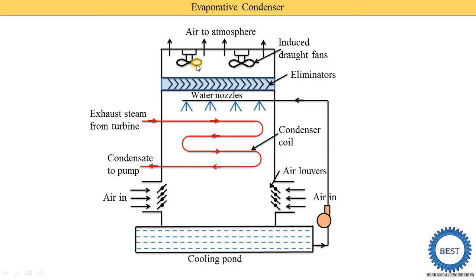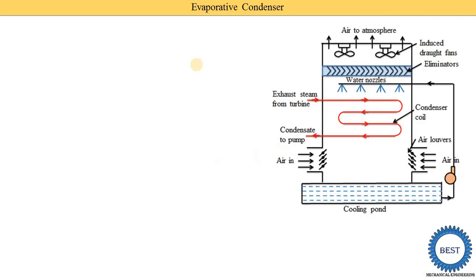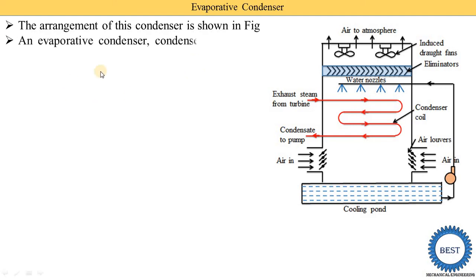This is the basic construction of the evaporative condenser. Now let's understand its working. In this condenser, a condenser coil is used — not a shell. Earlier we studied shell-and-tube type condensers where there is a shell with a number of tubes inside. But here we use a coil, meaning only one continuous tube. The inlet is exhaust steam and the outlet is condensate.